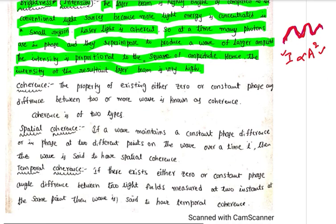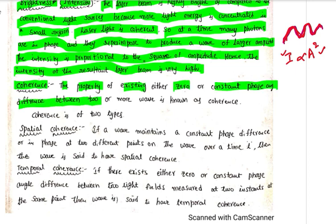The next characteristic is Coherence. This is the last characteristic of laser. Coherence is the property of existing either zero or constant phase difference between two or more waves.